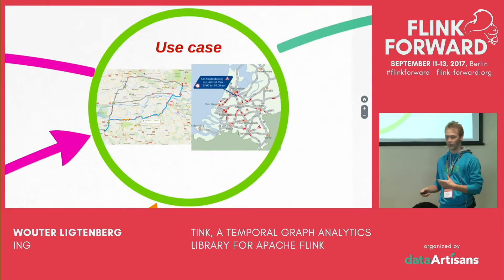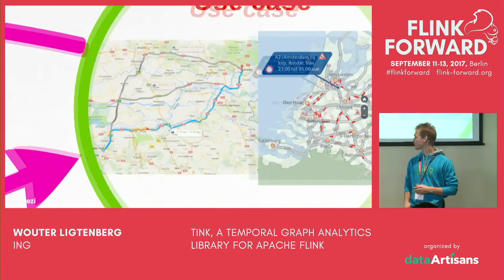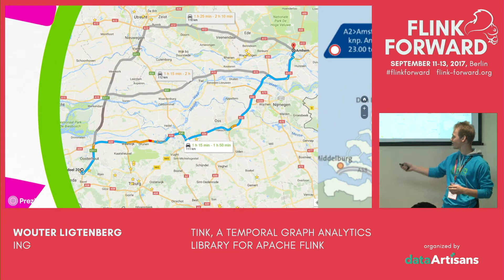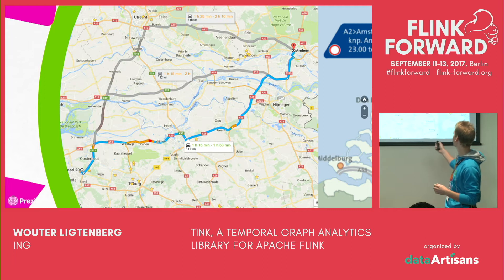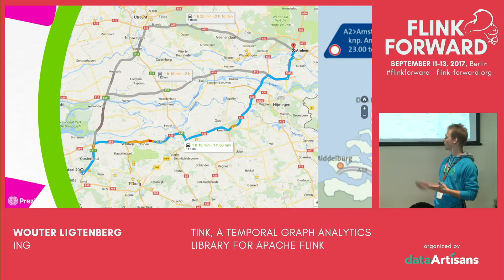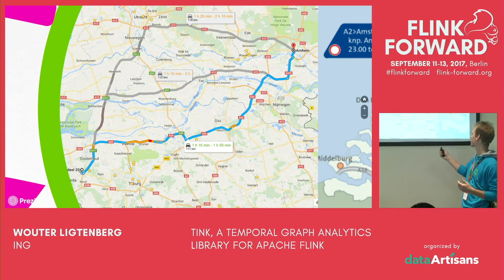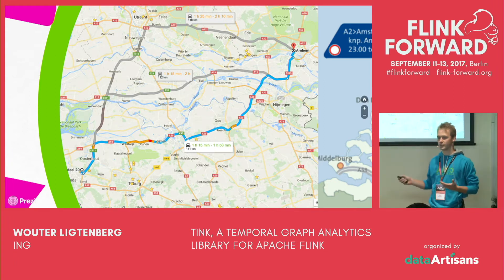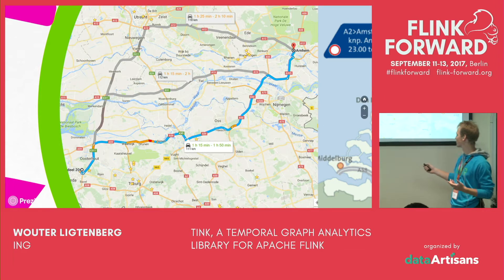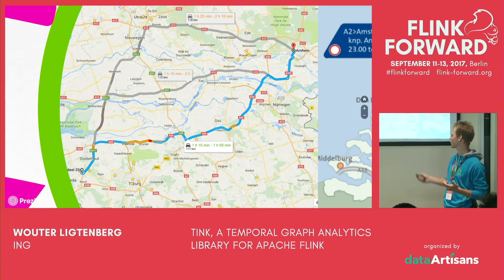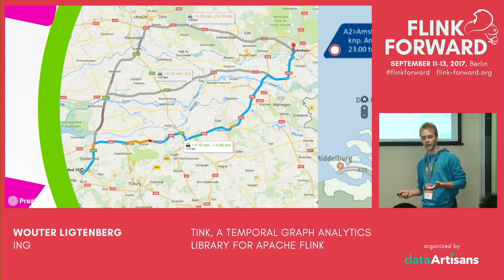So, the use case. My dad lives in Breda, which is right here, and every day he travels to work in Arnhem. When you're at 7 a.m. and you look at the best route you could take, Google Maps represents this road over here with some small traffic congestion here. However, if you would drive this road and get to this point after half an hour, there would be a major traffic congestion there, which happens every day.